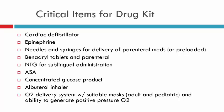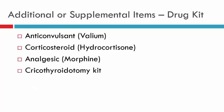Critical items for any emergency drug kit: access to a cardiac defibrillator, epinephrine, needles and syringes or preloaded syringes, Benadryl tablets and parenteral Benadryl, nitroglycerin, aspirin, concentrated glucose product, albuterol inhaler, and an oxygen delivery system with the ability to give positive pressure oxygen. Additional supplemental items to consider: an anticonvulsant like Valium, corticosteroid, morphine, and a cricothyroidotomy kit.